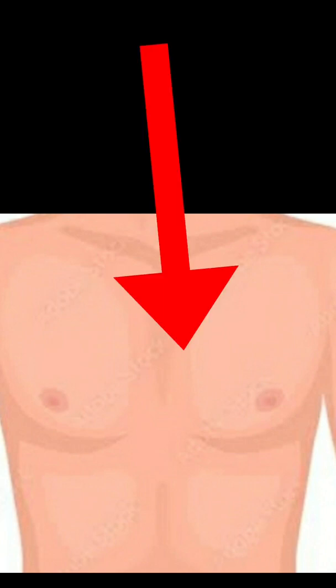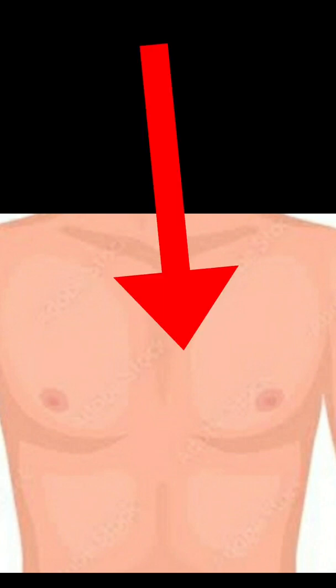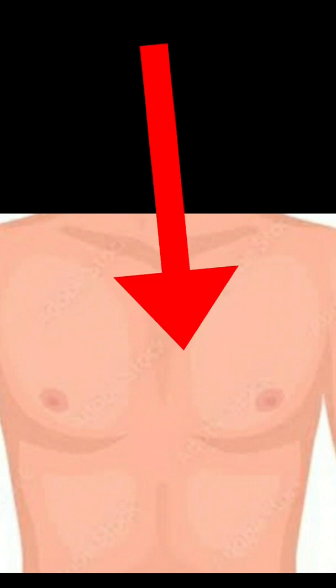The next part is chest. Jab hum breathe lete hai — inhale, exhale. Hum jab saas lete hai toh hamari chest aage badhti hai, broad ho jati hai. Aur jab saas chhodte hai toh woh wapas normal position pe chali jati hai.